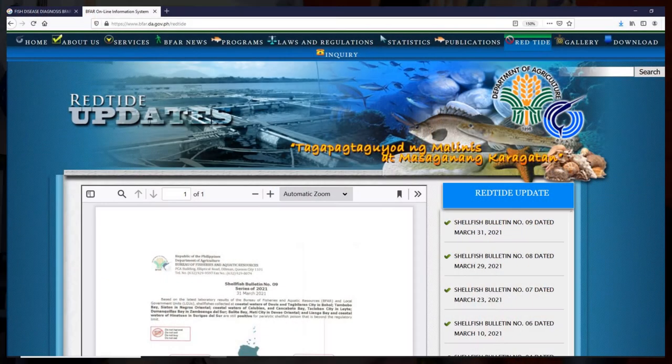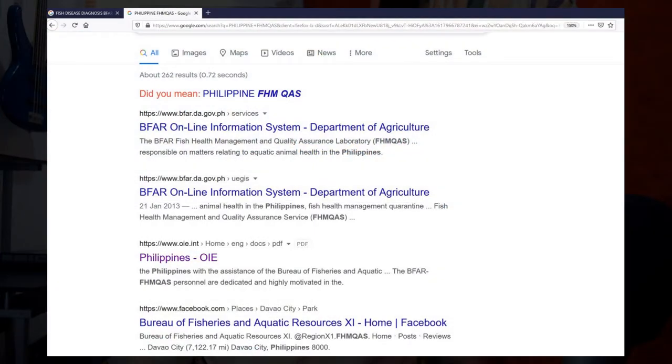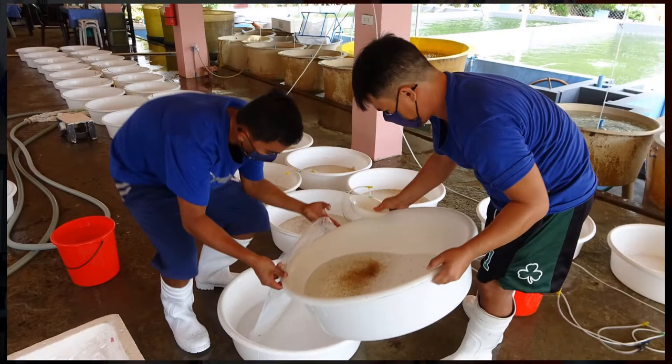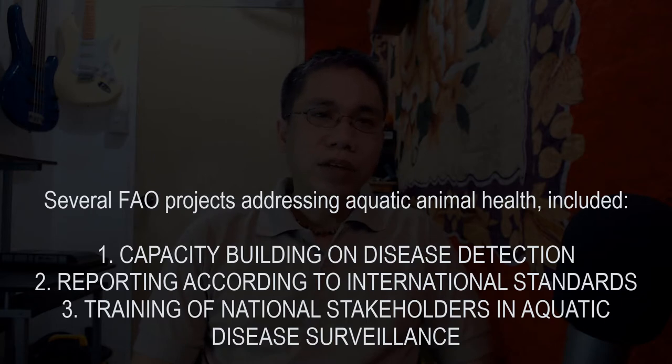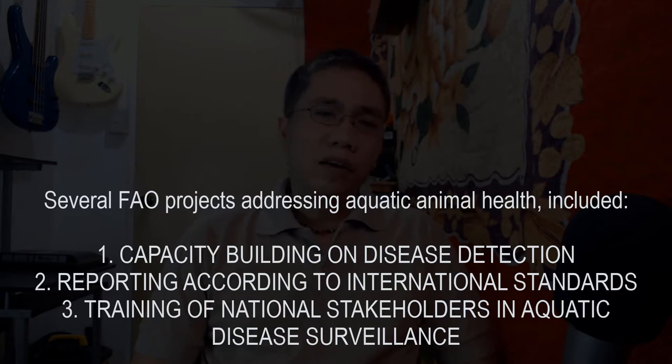In most developing countries, aquatic disease surveillance responsibility is separate from veterinary services. In the Philippines, I think BFAR handles disease surveillance and reporting, perhaps in collaboration with other aquaculture centers like DEC. The process of designing and implementing an aquatic surveillance program can be a challenging task, especially for personnel with limited knowledge in disease epidemiology and principles of surveillance. Several projects have addressed aquatic animal health through capacity building on disease detection, reporting according to international standards, and training of national stakeholders.